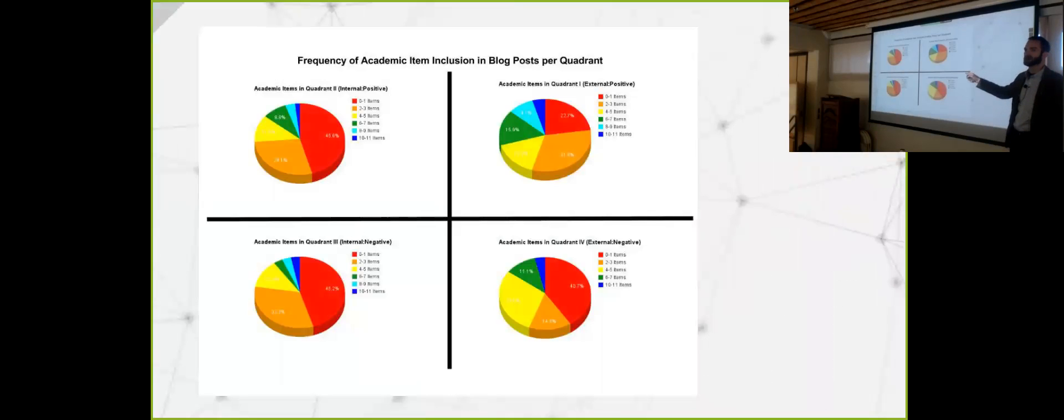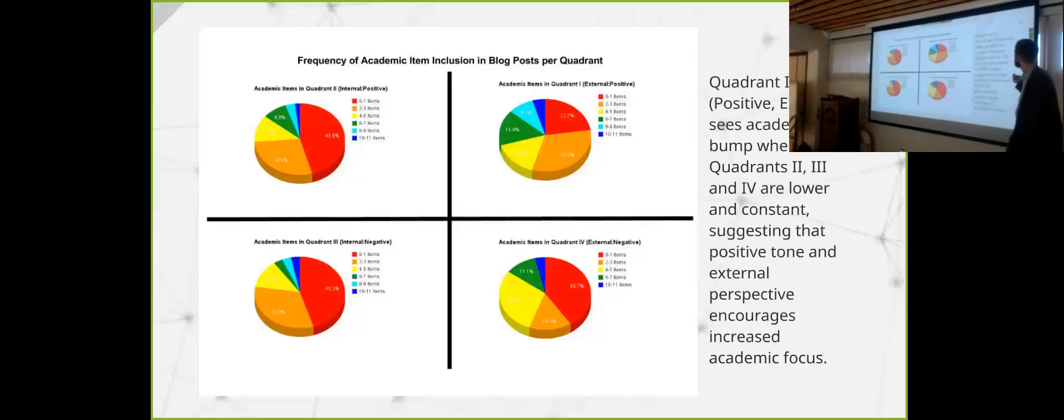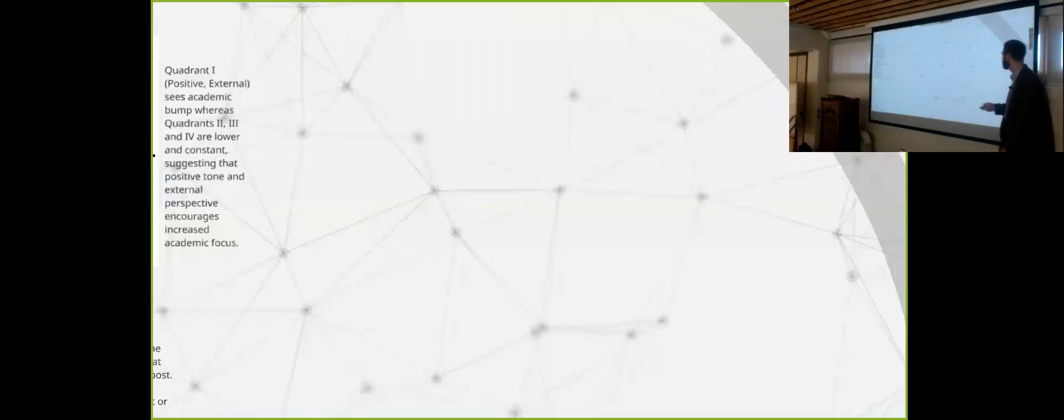And here's a really interesting thing. So I actually added up all the academic content within the blog post. The academic content was like vocabulary terms, assignments referenced, and competencies mentioned. Quadrants two, three, and four were more or less the same. But if you notice, the yellow line here is kind of the same there. It turned into green line, which meant six or seven items. So there was more academic content included in blog posts that were more positive and external in nature. So basically what that means is that when kids are having a good view about the world around them, they tended to include more academic content, which was a really cool insight.